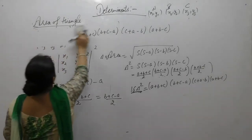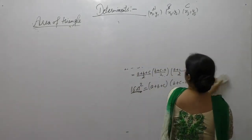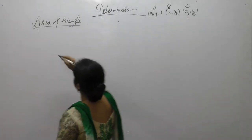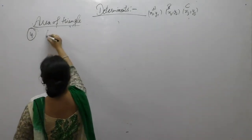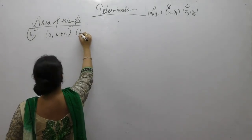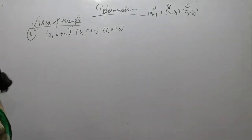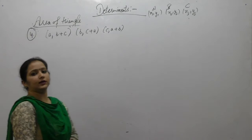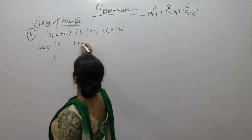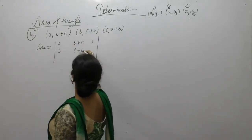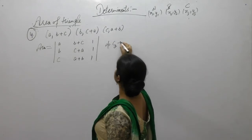Now the third question. Show that the points (a, b+c), (b, c+a), (c, a+b) are collinear. Three points are said to be collinear if area of the triangle formed is equal to 0. So area equals 1/2 times the determinant with rows (a, b+c, 1), (b, c+a, 1), (c, a+b, 1). Now operate C2 as C2 plus C1.